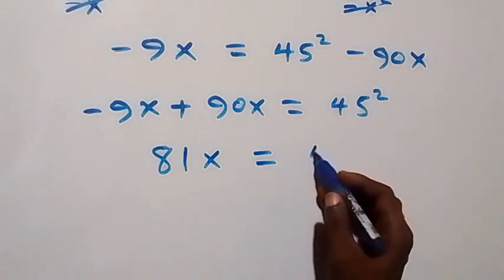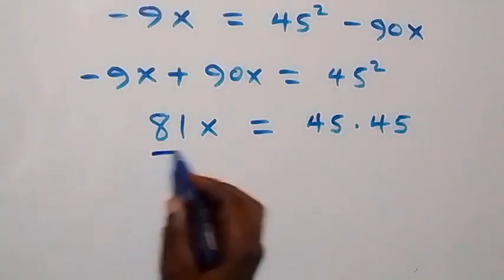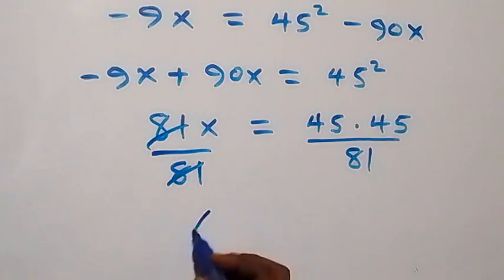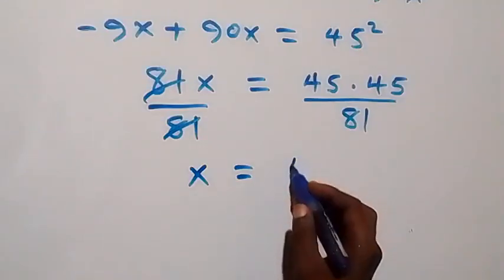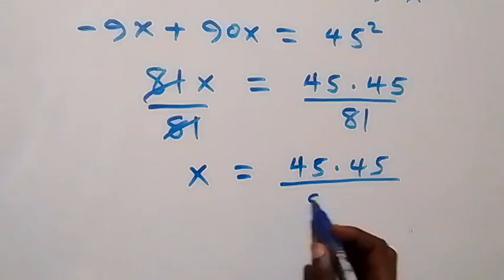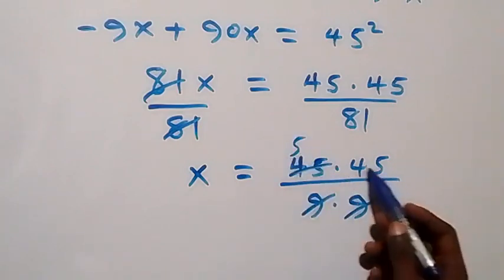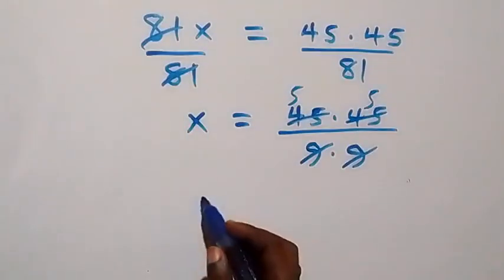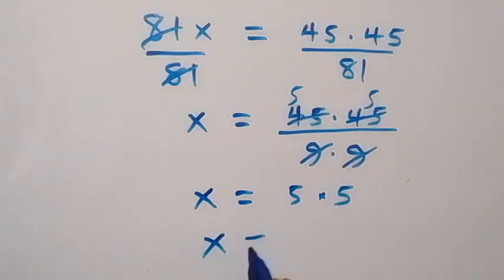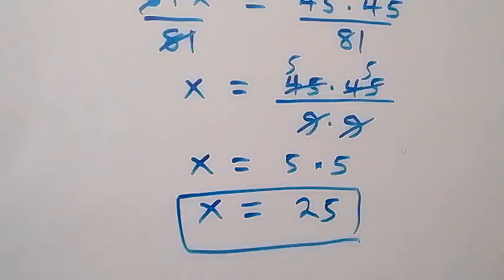We can rewrite 45 squared as 45 times 45, then divide both sides by 81. So x equals 45 times 45 divided by 81. Since 81 is 9 squared, that is 9 times 9: 9 goes into 45 five times, and again 9 goes into 45 five times. So we have x equals 5 times 5, which means x equals 25.